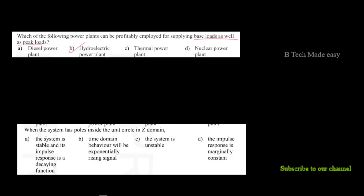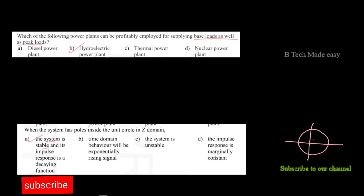When the system has poles inside the unit circle in the Z-domain, the system is stable and its impulse response is a decaying function. Looking at the unit circle and the pole positions, stability is confirmed when all poles lie inside the unit circle. These questions are very important for the comprehensive exam — let's prepare. Thank you.